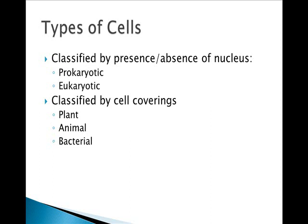Cells can be classified by their cell coverings as well. For example, plant cells have a cell wall and a cell membrane. Animal cells only have a cell membrane, with the exception of one animal on the planet. And bacterial cells have a cell membrane and a capsule, sometimes referred to mistakenly as a cell wall.